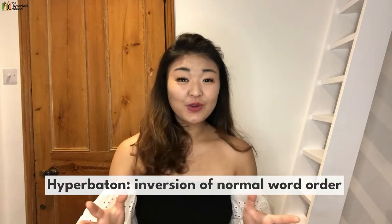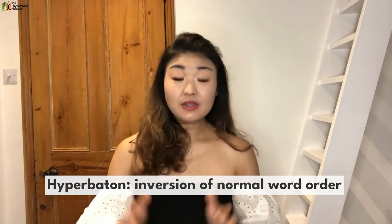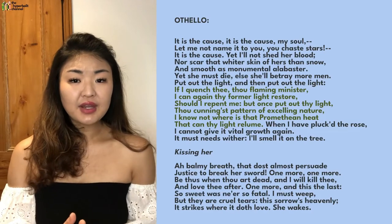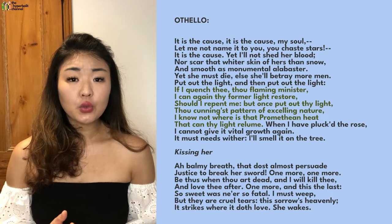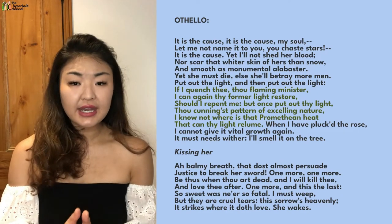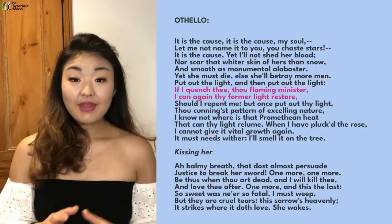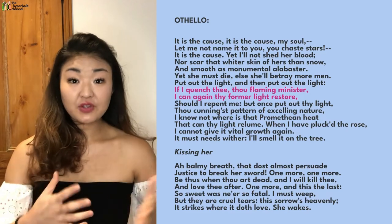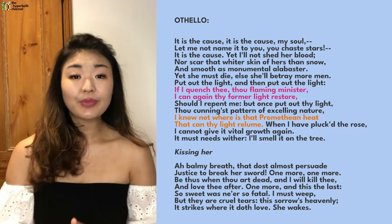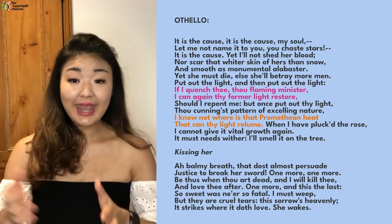We see the twistedness of his thinking reflected in the use of hyperbaton — the inversion of normal word order — which appears in the light analogy section: 'If I quench thee, thou flaming minister, I can again thy former light restore, should I repent me? But once put out thy light, thou cunningst pattern of excelling nature, I know not where is that Promethean heat that can thy light relume.' The hyperbatonic phrases are 'I can again thy former light restore' — as opposed to 'I can again restore thy former light' — and 'I know not where is that Promethean heat that can thy light relume' — as opposed to 'I know not where that Promethean heat is that can relume thy light.'